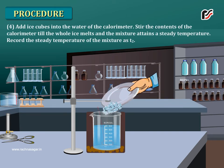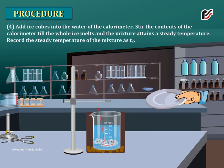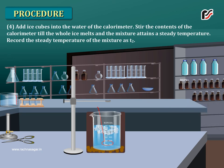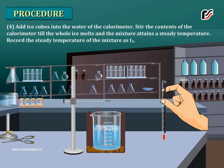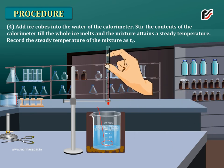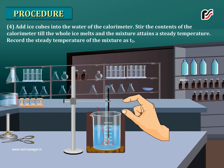Add ice cubes into the water of the calorimeter. Stir the contents of the calorimeter till the whole ice melts and the mixture attains a steady temperature. Record the steady temperature of the mixture as T2.